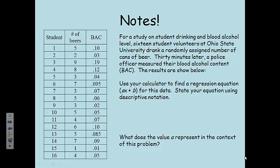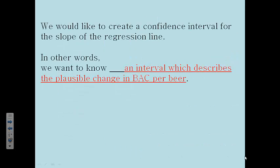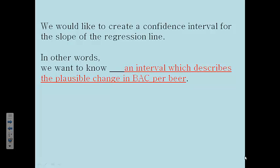All right, so one more question that I'll show you. We have another set of data, and here's the model. We have a study on student drinking and blood alcohol content. They asked volunteers at Ohio State to drink a randomly assigned number of cans of beer, and then 30 minutes later, a police officer measured their blood alcohol content. We're going to use our calculator to find a regression equation. Then we're going to answer the question, what does the value A represent in the context of this problem? What we're trying to do, the goal, the ultimate goal in this section, is to create a confidence interval for the slope of the regression line. So, we are going to be building a confidence interval, just like we've done in the past, except instead of trying to estimate a mean or a proportion, we're going to try to estimate the slope of the regression line.